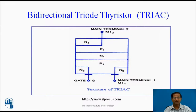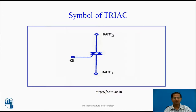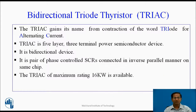Triac. It is also called as a bidirectional triode thyristor. It is a three-terminal, five-layer device. The terminals are MT1 (main terminal 1), MT2 (main terminal 2), and G (gate). The Triac gains its name from the contraction of the word triode for alternating current. It is a bidirectional device and is equivalent to a pair of phase-controlled SCRs connected in inverse parallel on the same chip — that is, an anti-parallel connection of two thyristors. The Triac of maximum rating 16 kW is available in the market.